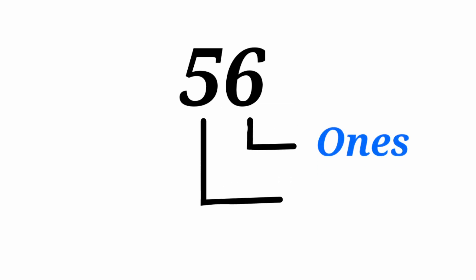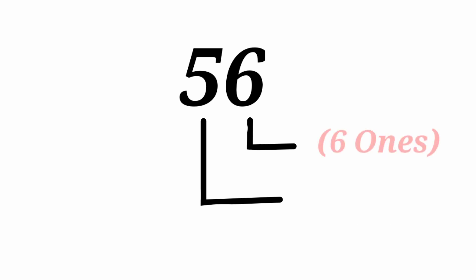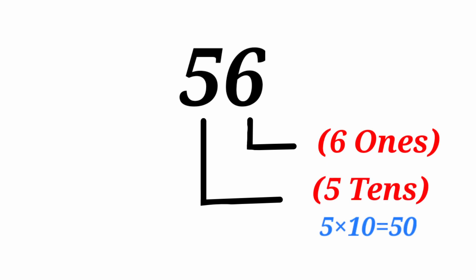Now I write the number 56. How many digits do you find in the number? 56 is a 2-digit number. 6 is in the 1s place. 5 is in the 10s place. That means 6 ones and 5 tens. 5 tens means 50.